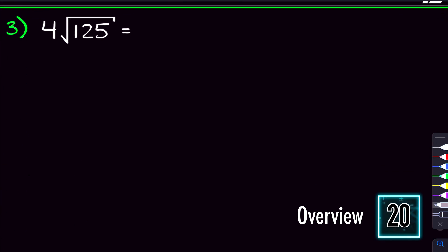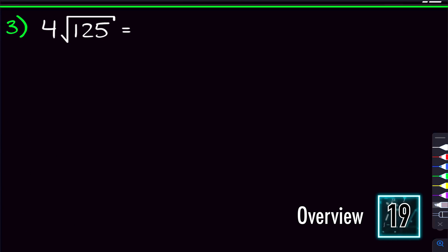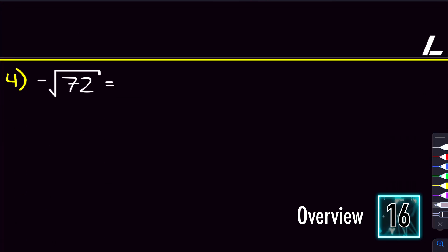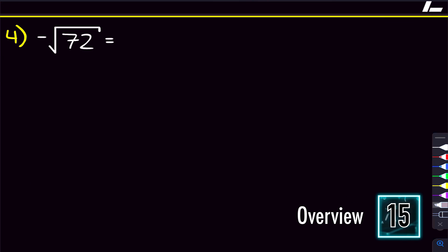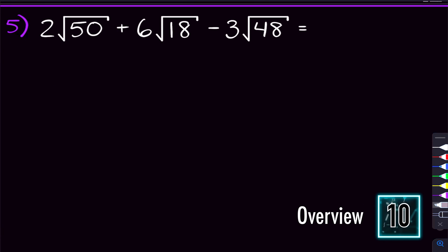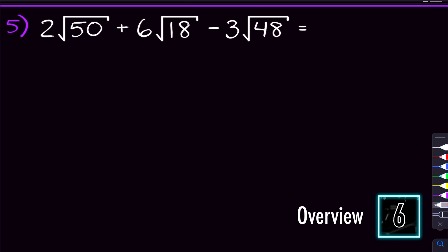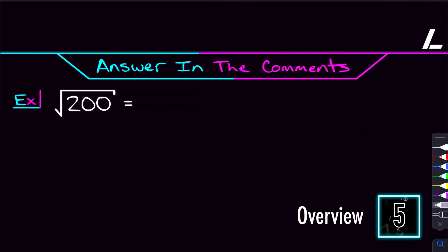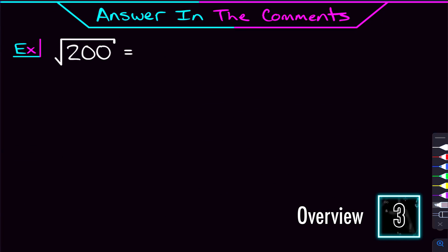Then I'll start throwing in some different stuff, like what happens when we have a number being multiplied out front, what happens when we have a negative being multiplied out front, and also what happens when we have an entire expression where we have radicals being added and subtracted. We'll go through all that, and then I'll give you a problem to try and answer in the comments. And by that point, it should honestly be breezy.